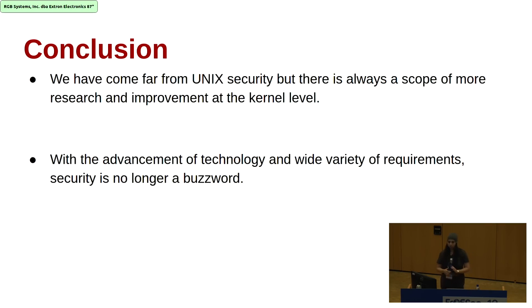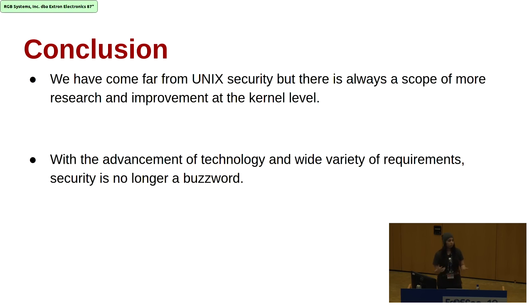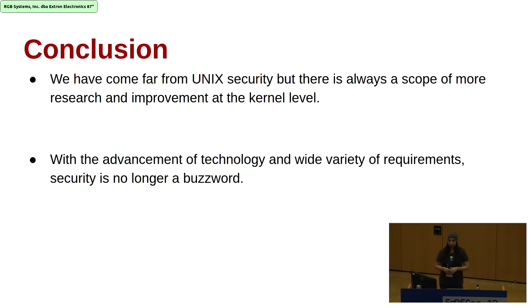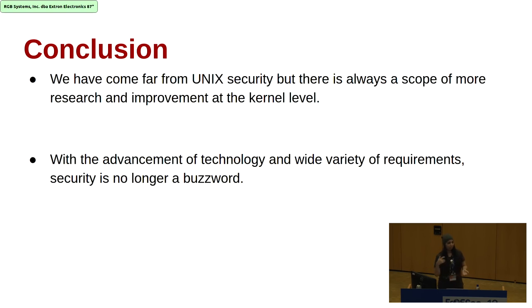In conclusion, we have come far from Unix DAC security to the kernel self-protection project. But there is always scope for more research, because as technology advances, the number of bug classes increases as well. Security is no longer a buzzword but a necessity. There are many CVEs — in the first two months alone, ten pages worth — which can be handled, and we can add more features to the Linux kernel.